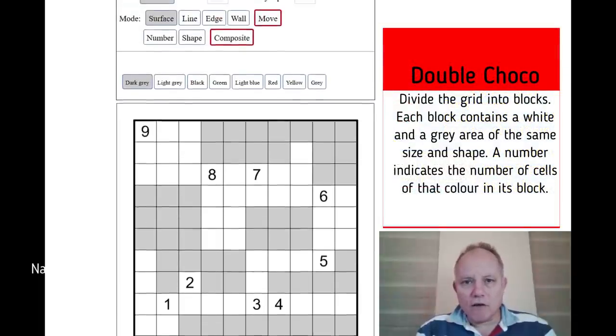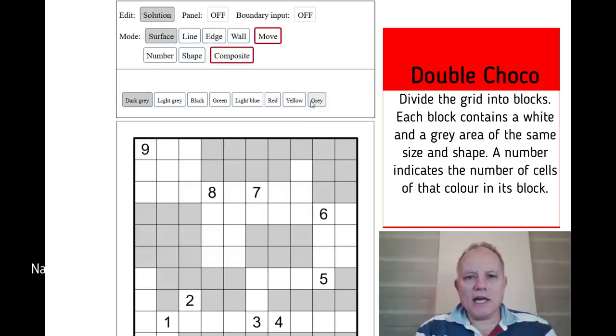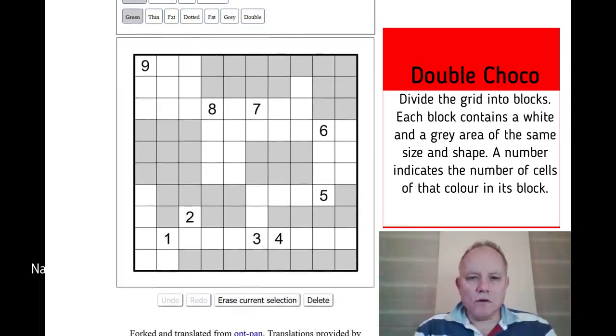What we have to do here is pick the edge mode of entry and then draw lines along the edges. So let's start with this nine. Now you can see which nine white cells are together. It must be these top three by three box because otherwise they'd run into an eight. That's a pretty easy start.